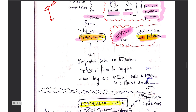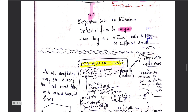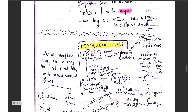Once these gametocytes are developed, they are the infective form important for transmission to the mosquito. When the mosquito bites a malaria-infected person, and the gametocytes enter the mosquito during its blood meal, the mosquito life cycle will again continue.